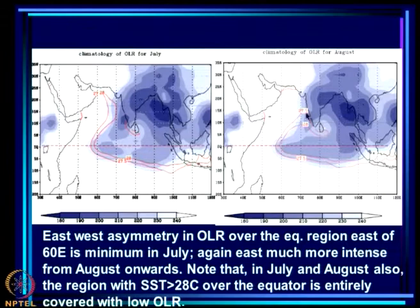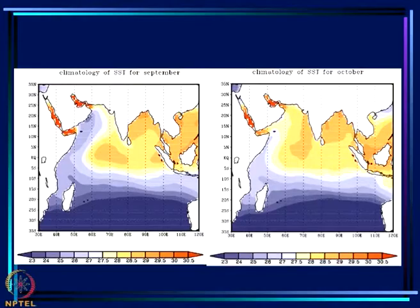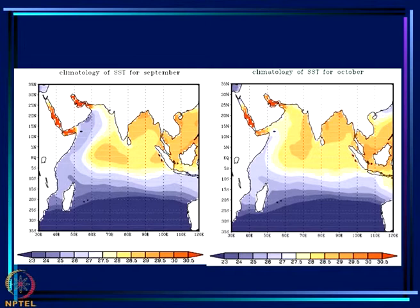As for OLR in July and August, the dynamics appear very favorable — almost the entire warm pool is covered with deep convection as evidenced from the OLR maps. Both July and August show the warm pool covered with low OLR. By September the cooling from monsoon withdrawal begins, and by October quite a large pool of warm water has rebuilt over the Arabian Sea.